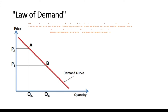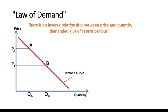The law of demand states that, other factors being constant — or ceteris paribus — price and quantity demanded of any goods and services are inversely related to each other. Inverse relationship means price has an opposite or contrary effect on the quantity demanded, as shown in this graph.